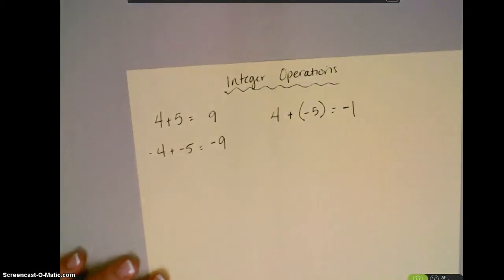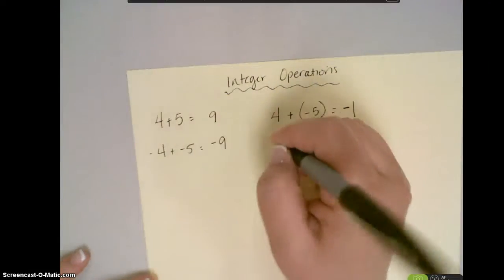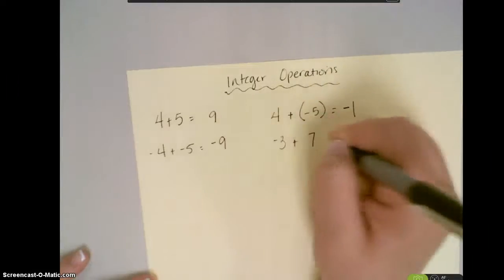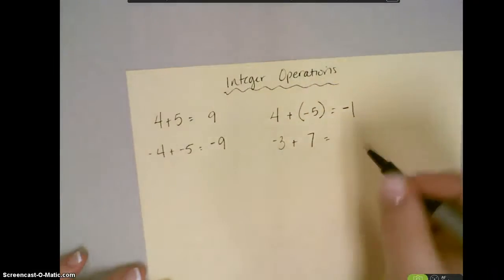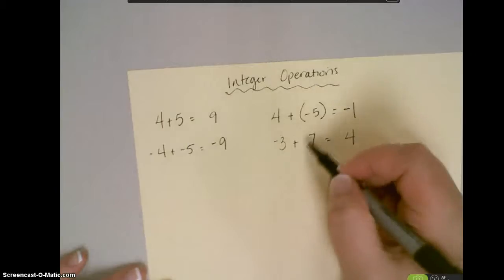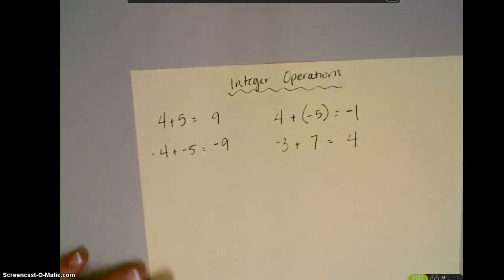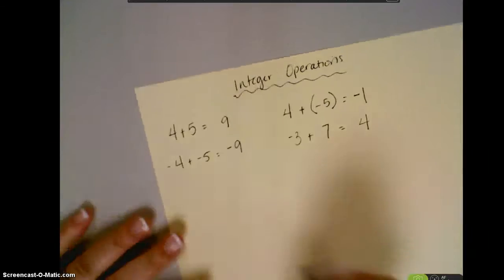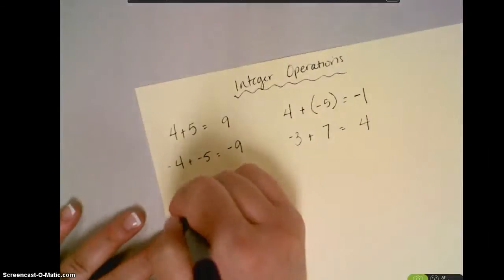So, 4 plus negative 5 would be negative 1. What if I had negative 3 plus 7? I'm going to subtract: 7 minus 3 is 4. Because 7 has a bigger absolute value, I keep my positive sign. So, same signs you add and keep, different signs you subtract, and keep the sign of the bigger absolute value.